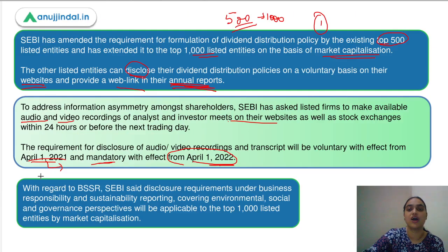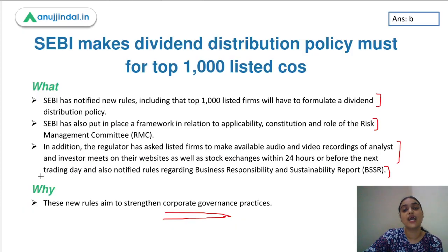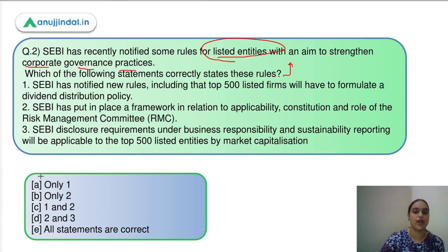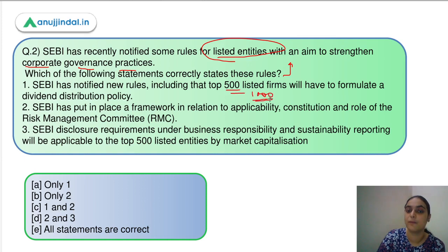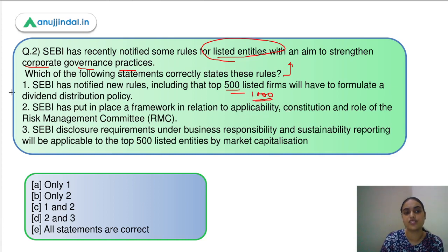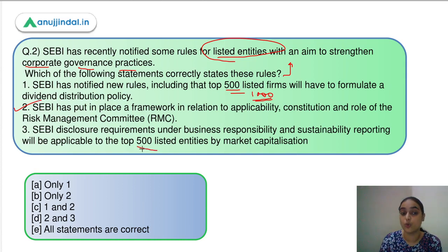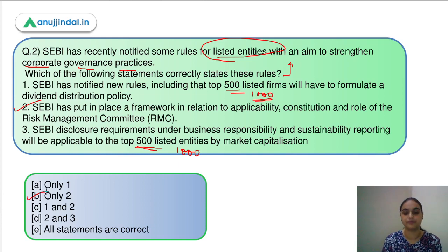These were the rules SEBI recently came up with to enhance the corporate governance of listed entities. Statement one is wrong because the dividend distribution policy now applies to top 1000, not 500 entities. Statement two — SEBI has put in place a framework for the risk management committee — is correct. Statement three is wrong because the business responsibility and sustainability reporting applies to top 1000, not 500 companies. So only statement two is correct; the answer is option B.